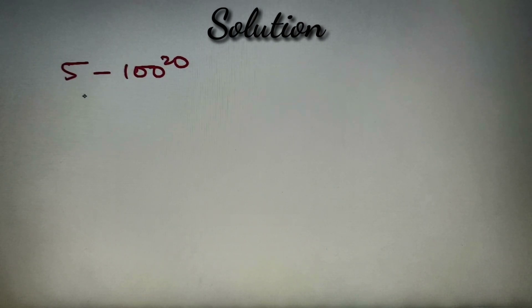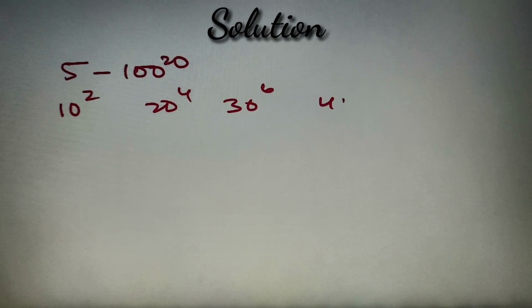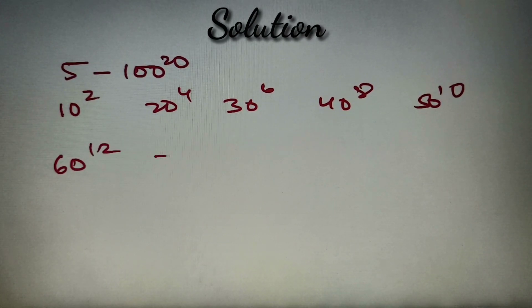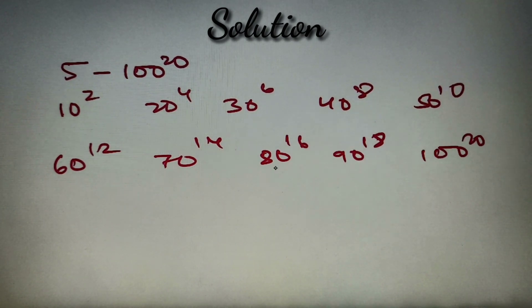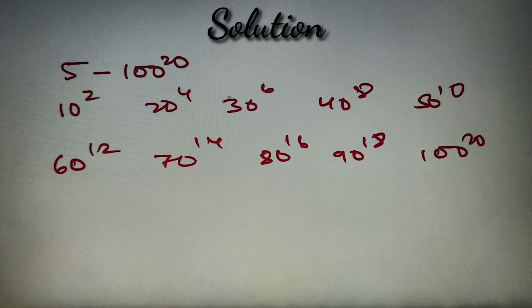Let's calculate the total powers of 2 in this number. We write down all numbers that contain at least a single power of 2. We have 20 numbers from 5 raised to power 1 up to 100 raised to power 20. All odd numbers contain no power of 2; all even numbers contain at least one. So we get powers of 2 from: 10 raised to power 2, 20 raised to power 4, 30 raised to power 6, 40 raised to power 8, 50 raised to power 10, 60 raised to power 12, 70 raised to power 14, 80 raised to power 16, 90 raised to power 18, and 100 raised to power 20. We calculate the total powers of 2 in each number and sum them to find the highest power of 2 in the numerator.